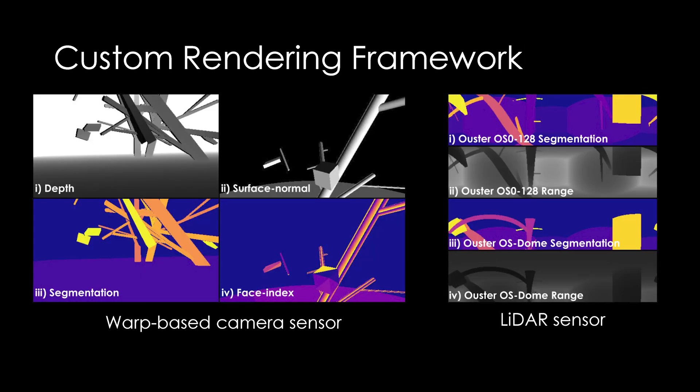Our framework allows us to go beyond the data types provided by Isaac GYM. Sensors with user-defined projection models, such as 3D LIDARs, can be simulated to obtain additional information, such as surface normals, face indices, and point clouds.